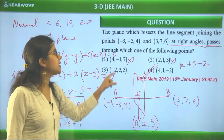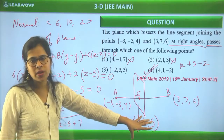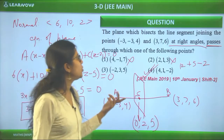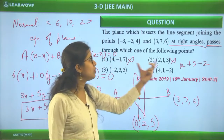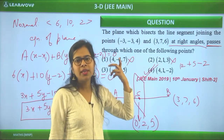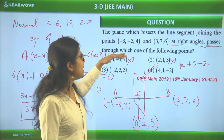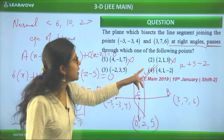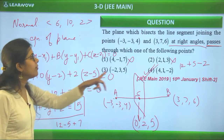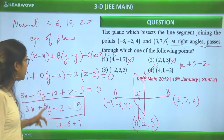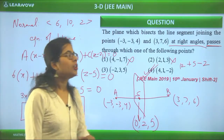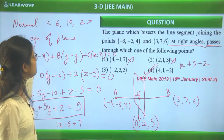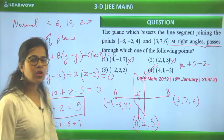When checking options, you can be strategic — start from option 1 and work to option 4, or intuitively think about which point might give the value 15 when substituted. The question is not too calculative — very simple overall. When you have the plane equation, you just substitute each option and check.